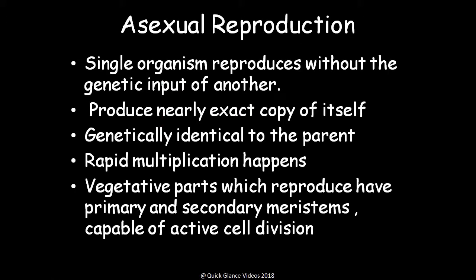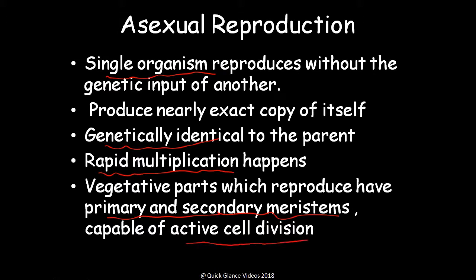Coming to the features of asexual reproduction: it is created by a single organism, and being created by a single organism, they produce a nearly exact copy of itself. The genetic identity is maintained and it is used for rapid multiplication of the organism. The vegetative parts which reproduce have primary and secondary meristems capable of active cell divisions.